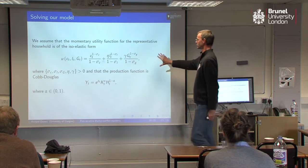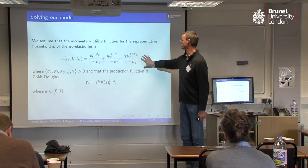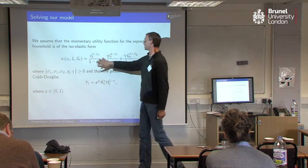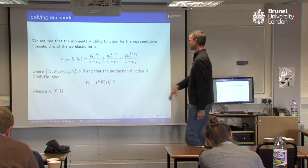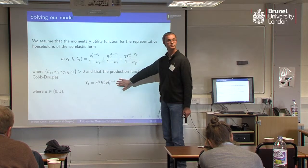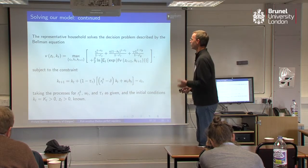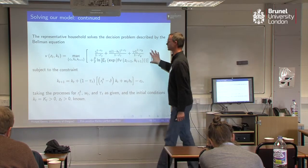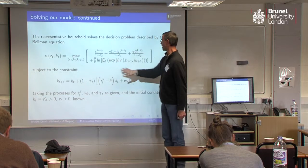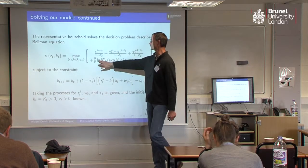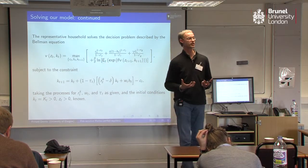I'm going to assume this functional form for the household's utility function — the momentary utility function is going to be of this isoelastic form. I'm going to assume that the production function is Cobb-Douglas. Then the household's problem boils down to this Bellman equation: we've got the momentary utility function and we've got this continuation value with the risk-sensitivity in there. We're solving the model for a Markov perfect equilibrium.